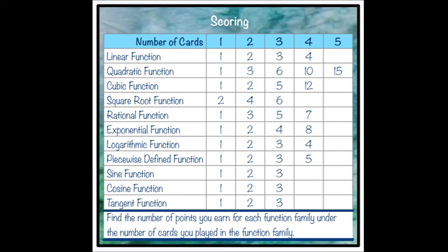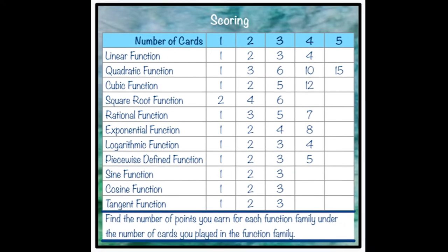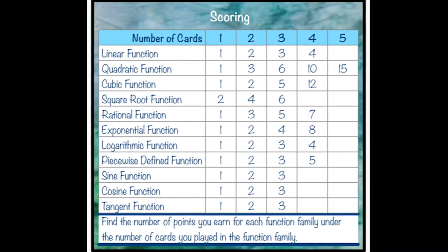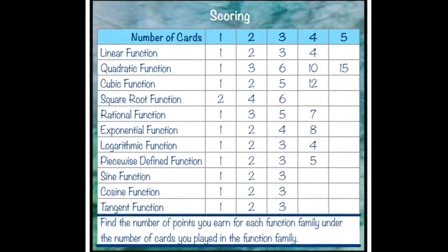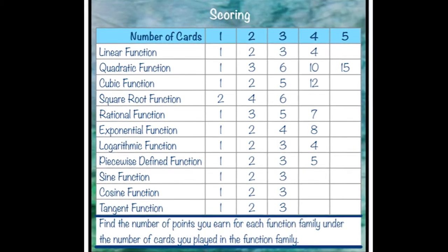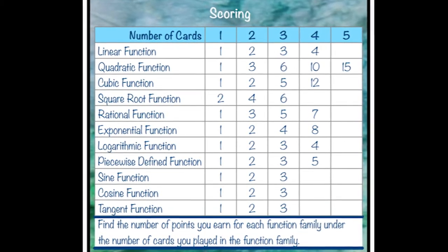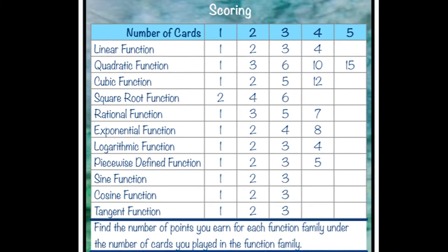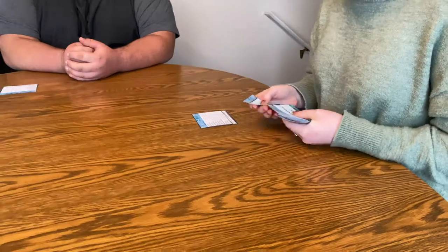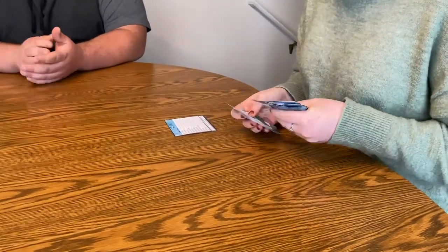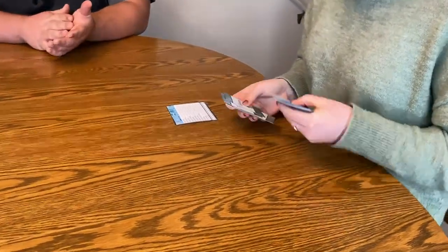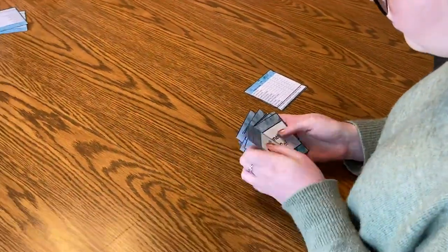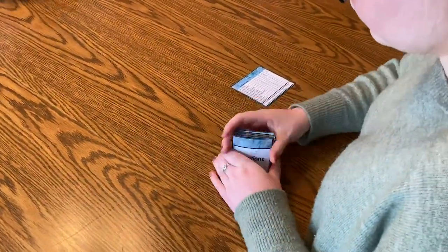When you receive the final card of the hand, place it face up with the other cards you collected. Score the cards you have collected according to the directions on the Functions Go scoring card. Collect and shuffle the Functions Go cards. Repeat these steps to play a total of three rounds.